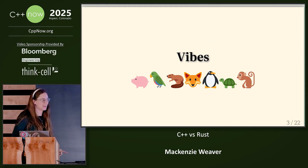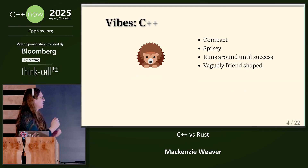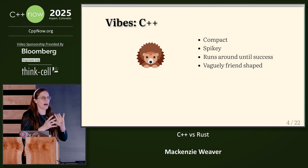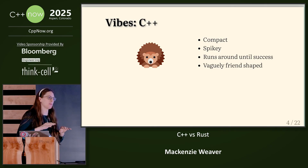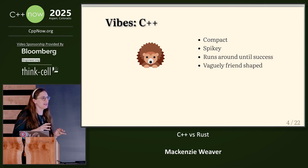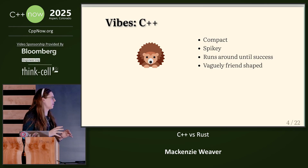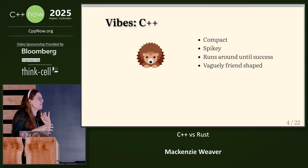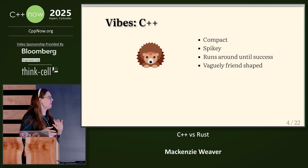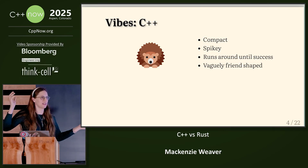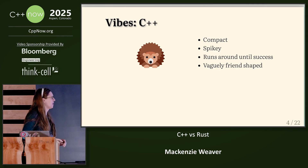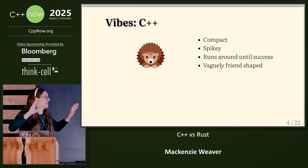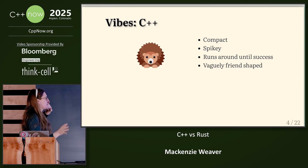With animals! So I would describe C++ as more like a hedgehog. It's very compact, very small when you actually write it. You can say a lot with a very little amount of C++. It's spiky, so if you handle it wrong, you will get hurt. And usually in my experience, programming C++ is more like running around until eventually I will have success, not really quite understanding what I do until finally all things fit together. Also, C++ is vaguely French-shaped.